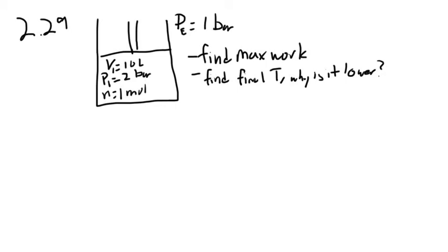Hello, this is an OXE video for problem 2.29 in the Kratky textbook. This is related to the previous problem 2.28, which was done in a previous video. This question asks: for the well-insulated piston-cylinder assembly containing one mole of ideal gas described in problem 2.28, describe the process by which you can obtain the maximum work from the system. Calculate the value of the work. What is the final temperature? Why is this final temperature lower than the calculated value in problem 2.28?